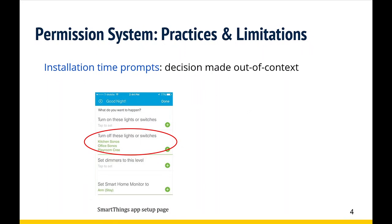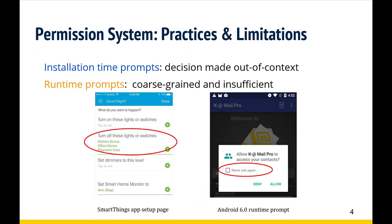As a quick recap: installation-time prompts require the user to make the permission-granting decision at installation time out of context, which is usually extremely hard for normal users. A more popular implementation called runtime prompts won't ask the user for permission until the app explicitly uses it — it puts the user in context, but in practice it fails because it usually only asks the user once the first time the app requests permission and won't ask again, making it coarse-grained and insufficient.